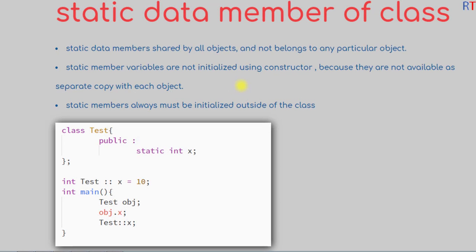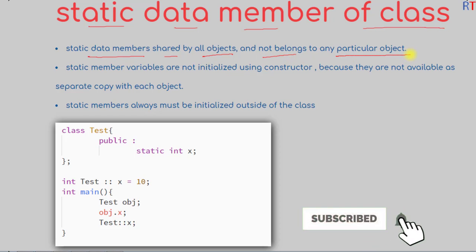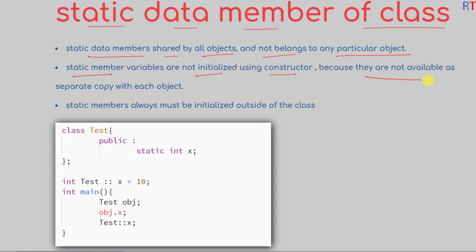In this video we're going to talk about static data members of a class. Static data members are shared by all objects and they do not belong to any particular object. Static members are not initialized using a constructor because they are not available as a separate copy with each object.